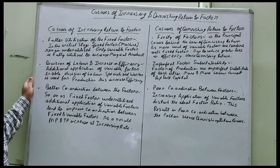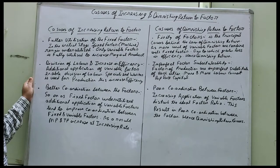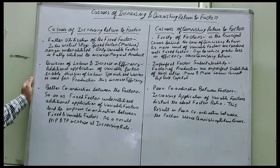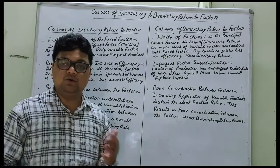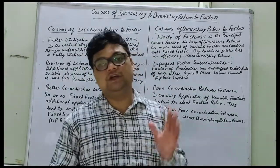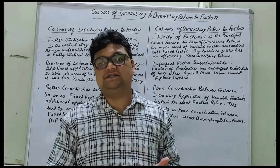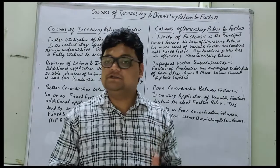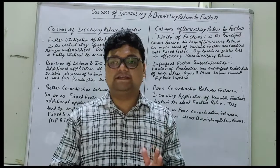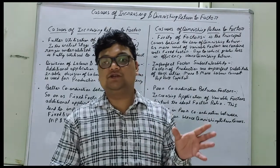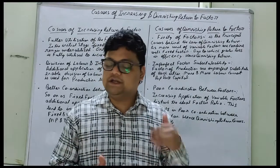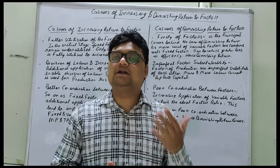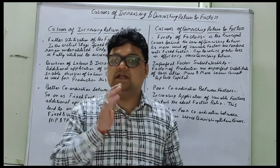The first cause is fuller utilization of fixed factor. In the initial stage, the fixed factor like machines remain underutilized; only the variable factor is fully utilized to increase marginal product. Fuller utilization means when resources are fully utilized. So in the initial stage, machines or fixed factors are not fully utilized — only variable factors are fully utilized.